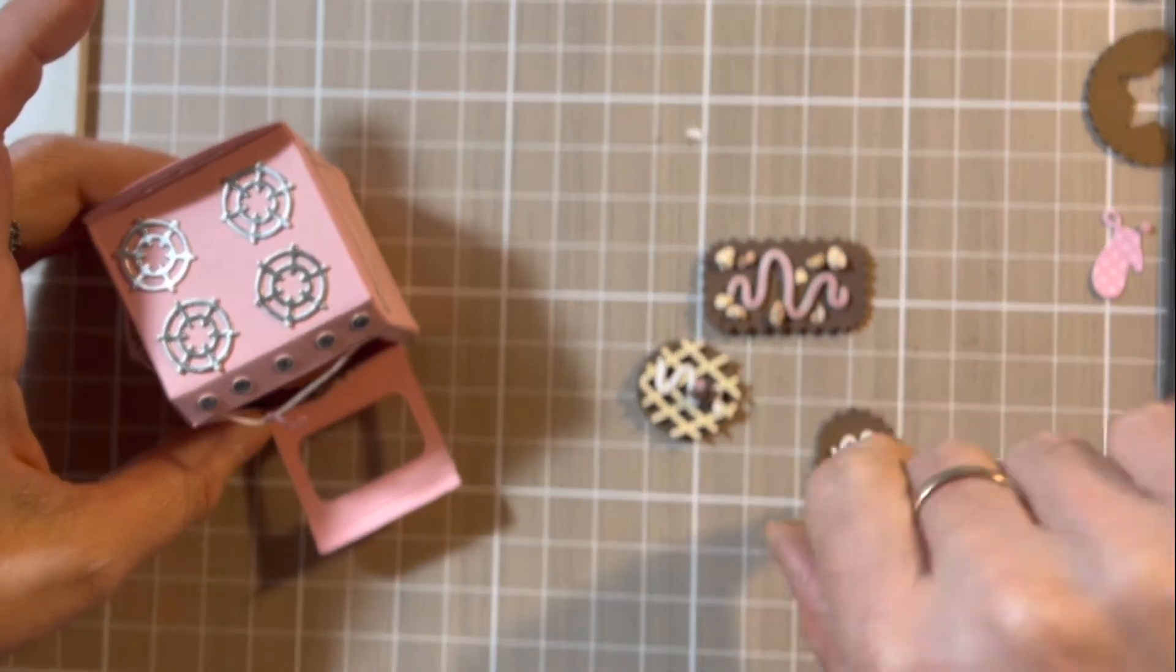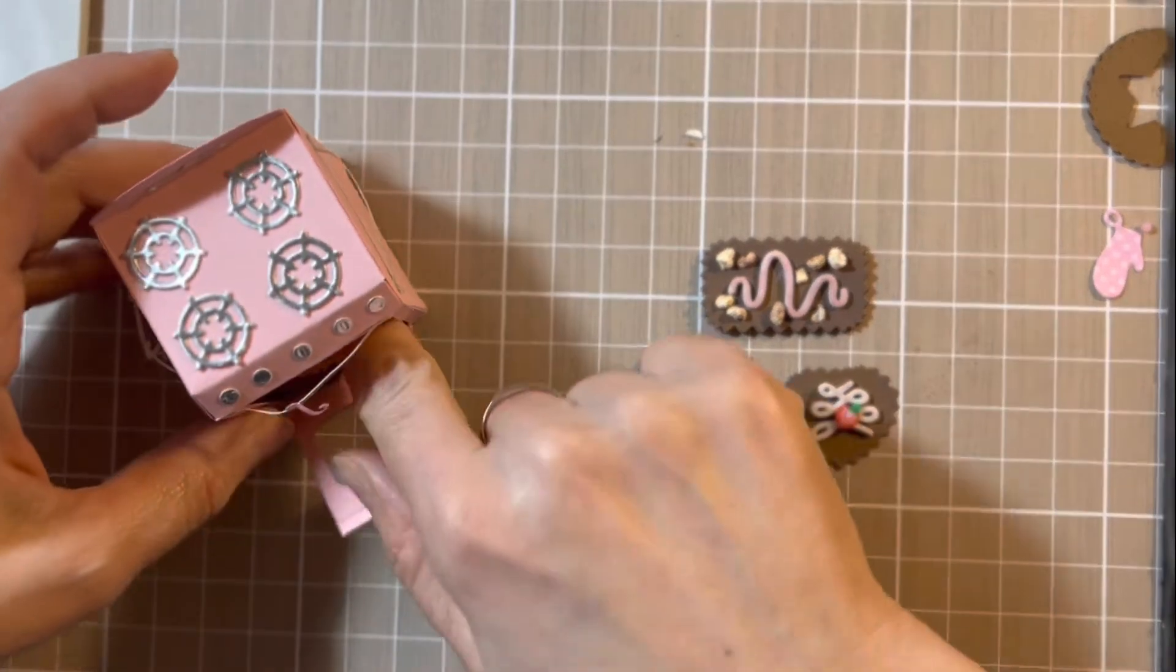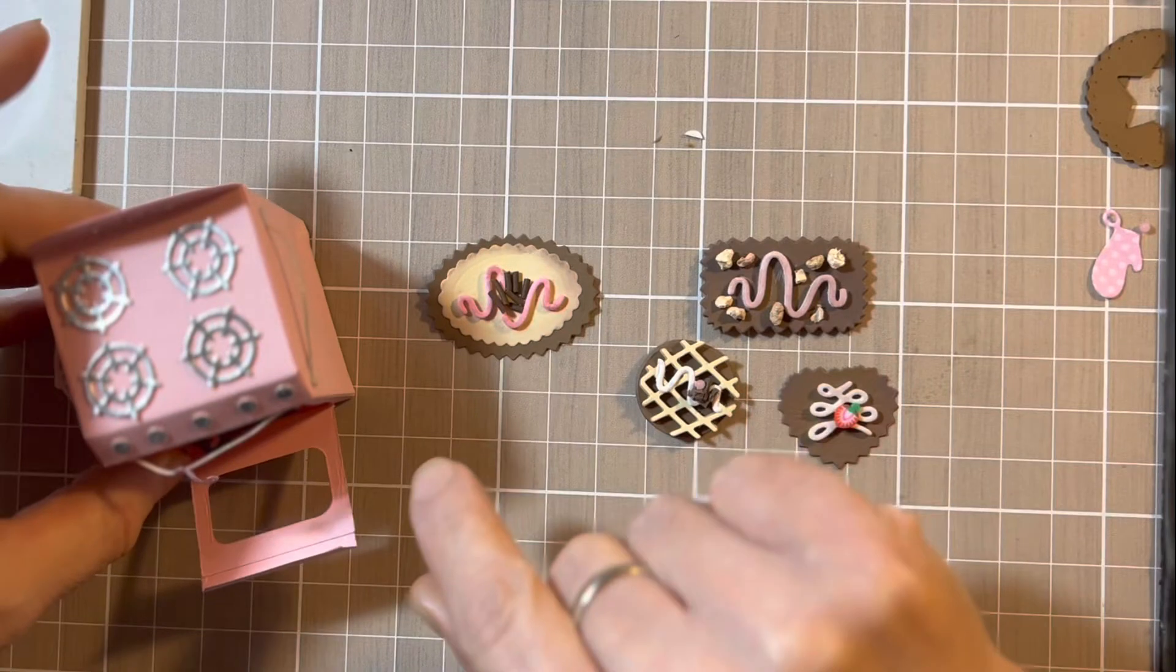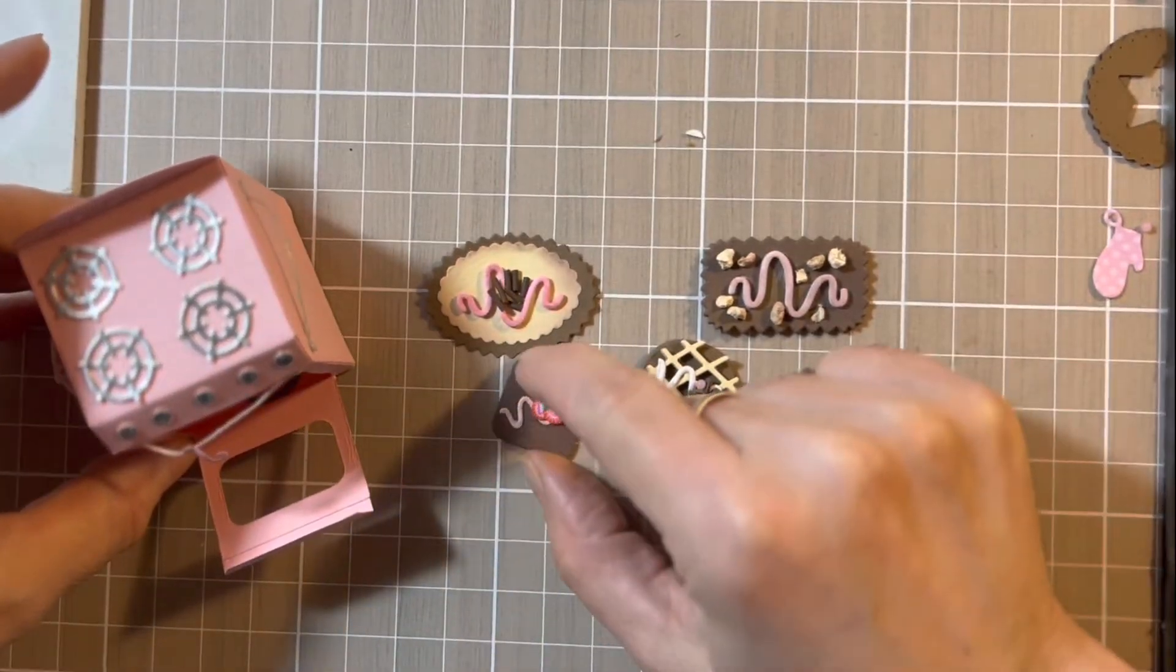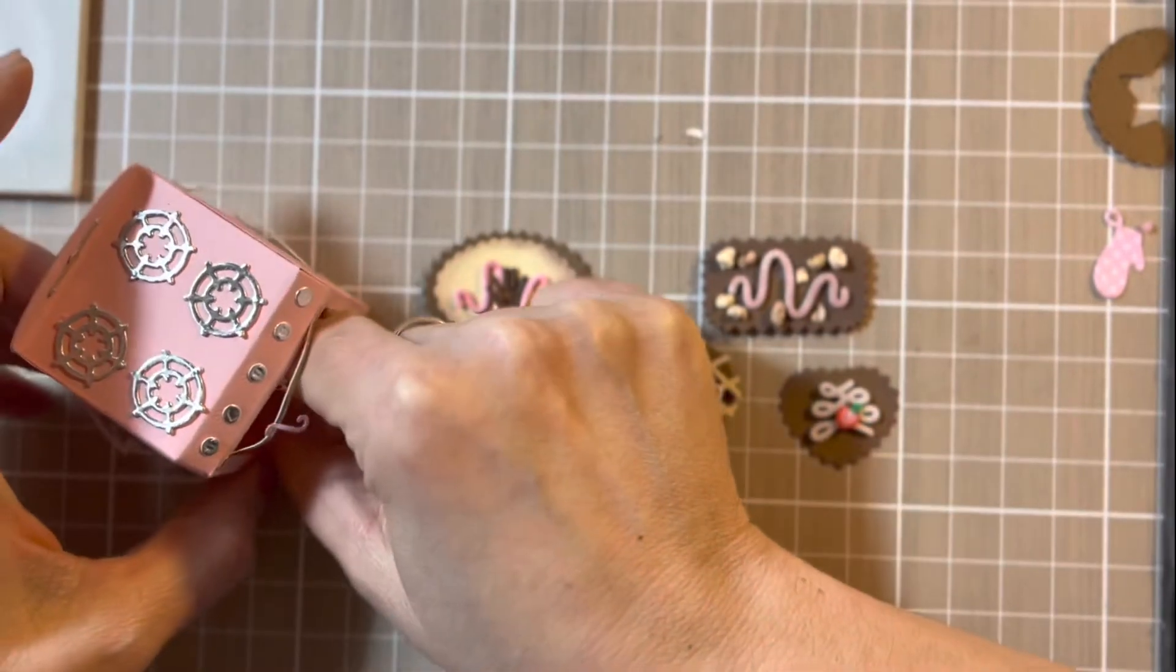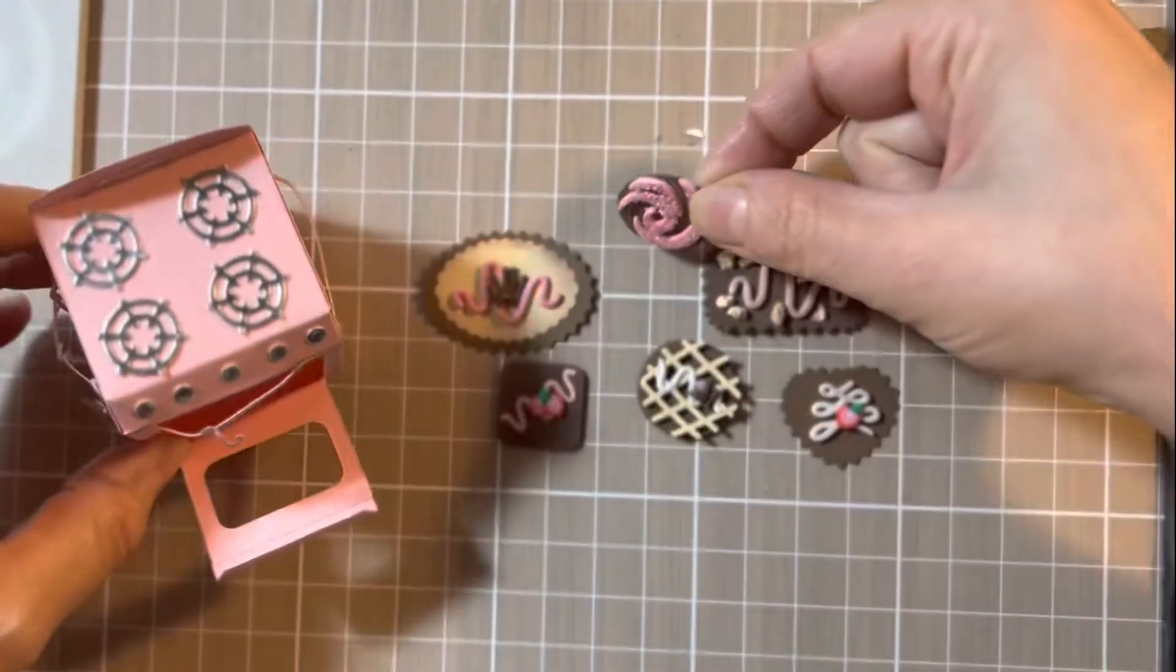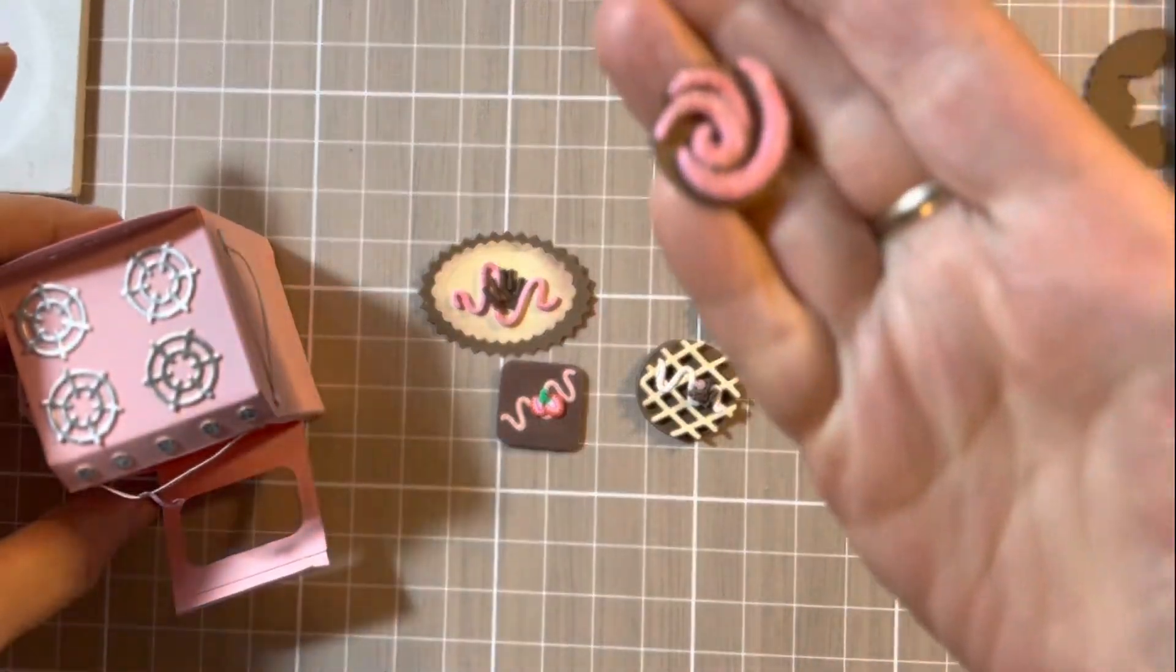Here is our third cookie. We made the big one. We made the fancy one with strawberry, and we had to make one with swirl and some sugar.